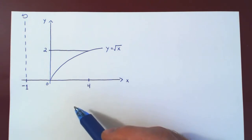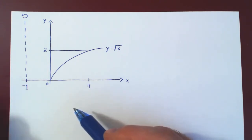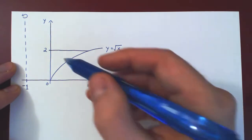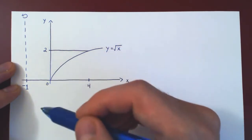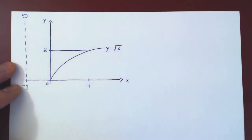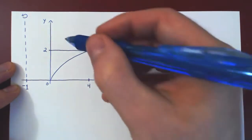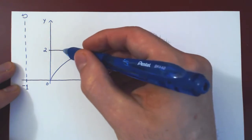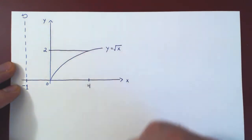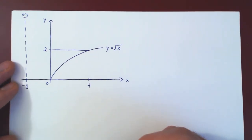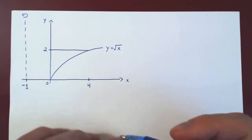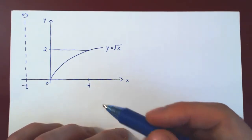Again, we will find the volume of this solid in two different ways. In this video, we will use a horizontal set of rectangles. In the next video, we'll use a vertical set of rectangles. So let's try and draw the full solid of revolution.